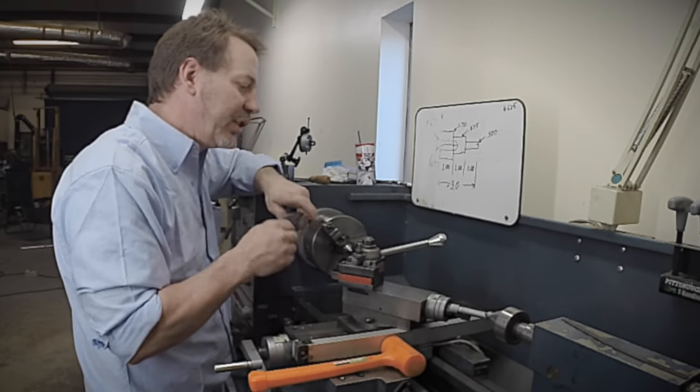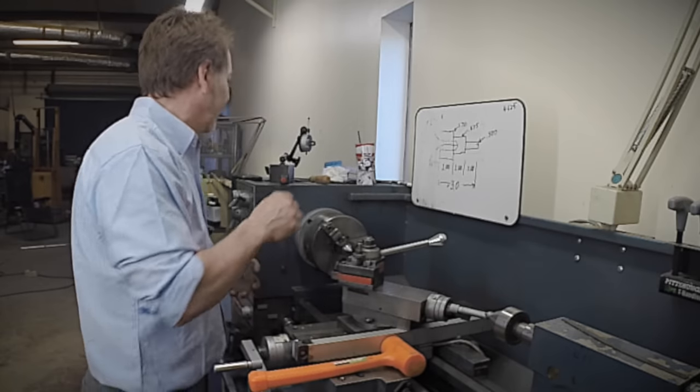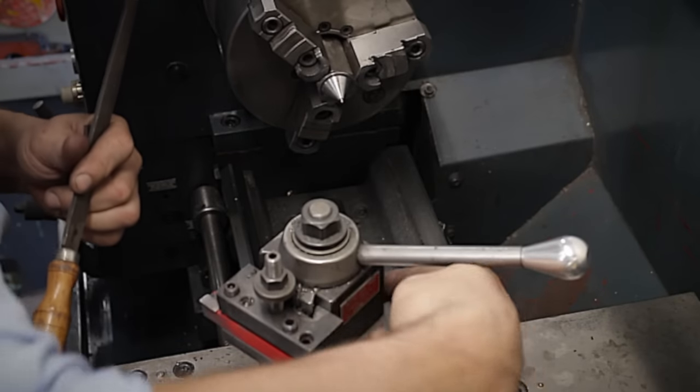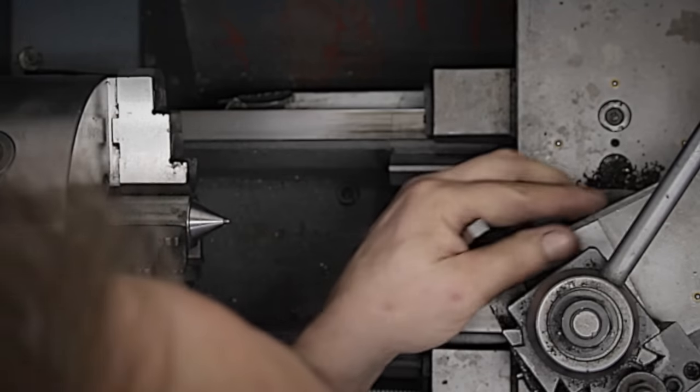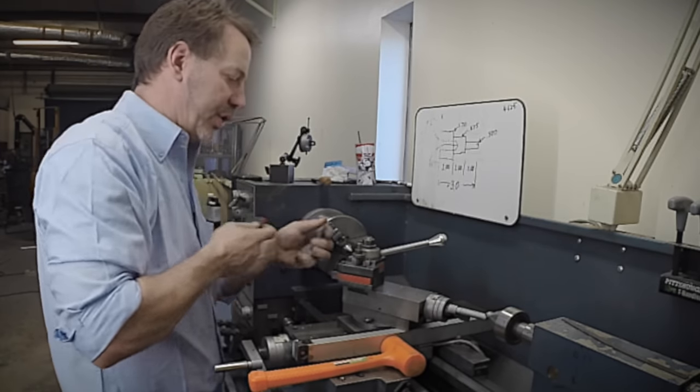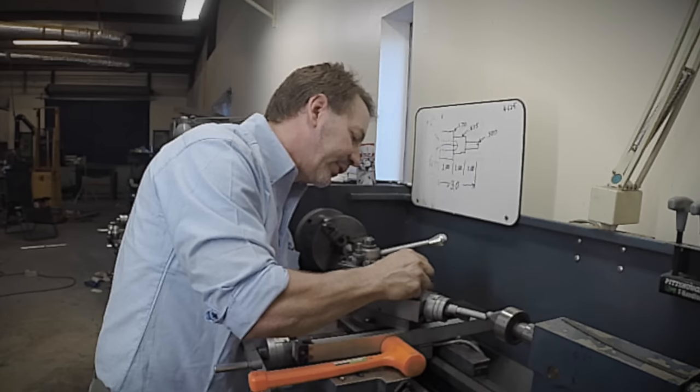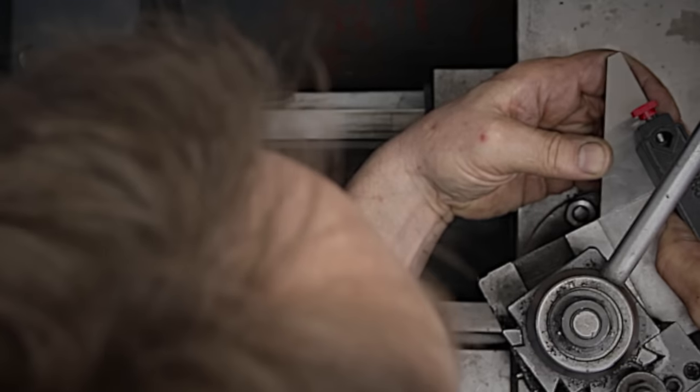What we need to do is hold this on here and set up a dial indicator. First of all, we want to make sure this edge is clean. Make sure there's no burrs on it. We're just going to stick it to it with a magnet. Make sure that's on there nice.